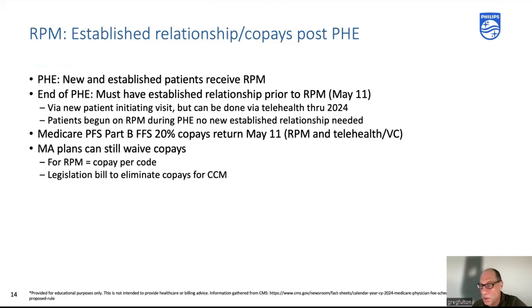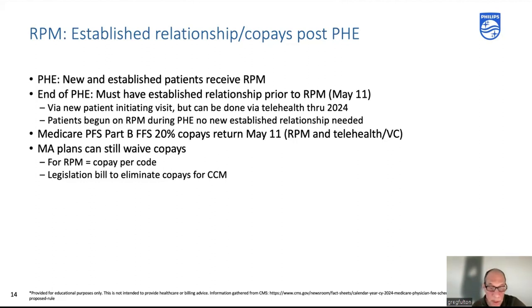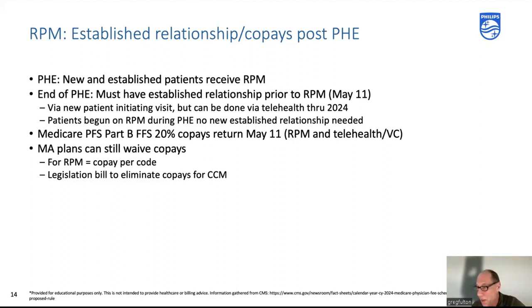The big issue: established relationships and co-pays post-PHE. The industry fought to continue the co-pay waiver, but CMS reverted — co-pays are back for patients, at 20% per code for Medicare Part B fee-for-service. Medicare Advantage plans can still waive co-pays, so if you're seeing MA patients in RPM, talk to your private payer plan. There is also a congressional bill that would eliminate co-pays specifically for chronic care management, though it doesn't appear to be faring well currently.